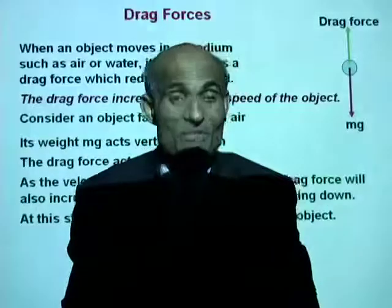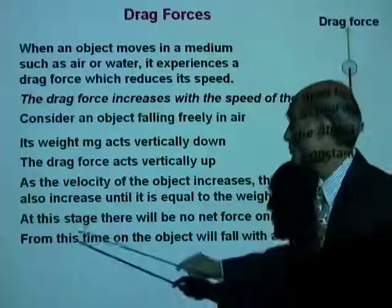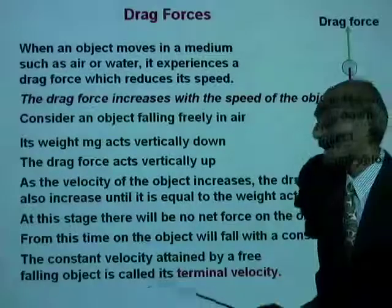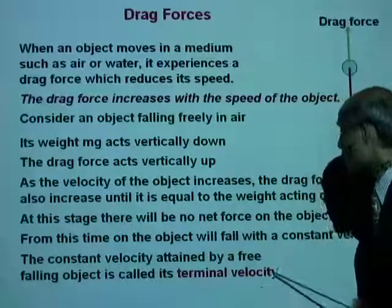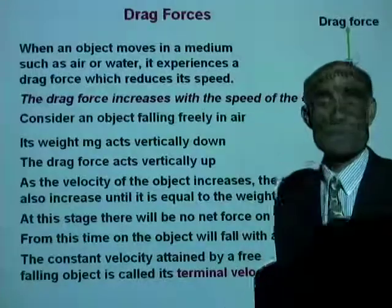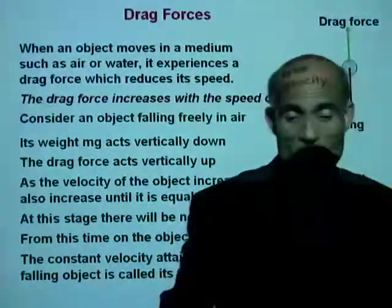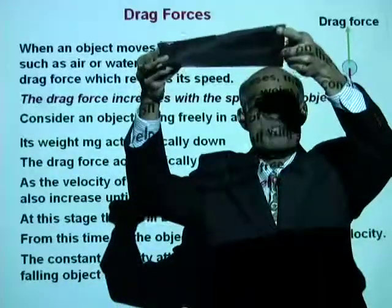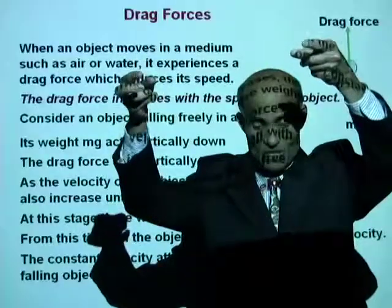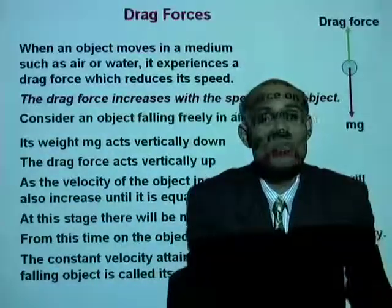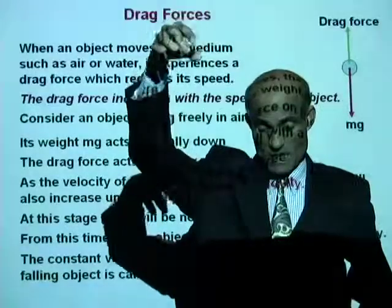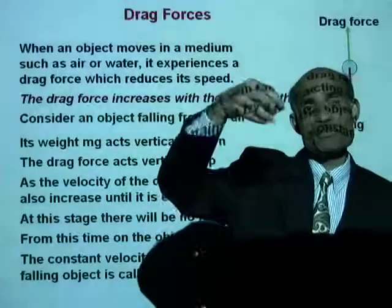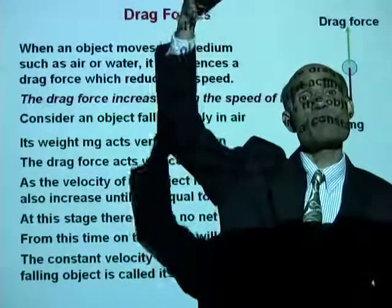If you jump from a very great height, as you keep increasing your speed the resistance of the fall also increases. A time will come when your weight acting downward is exactly equal to the drag force, and at that time there is no net force — no more acceleration. You will keep falling with the same speed. The object will fall with a constant velocity called the terminal velocity.